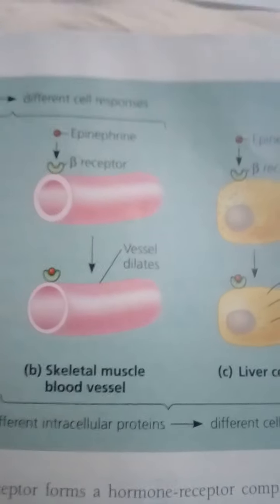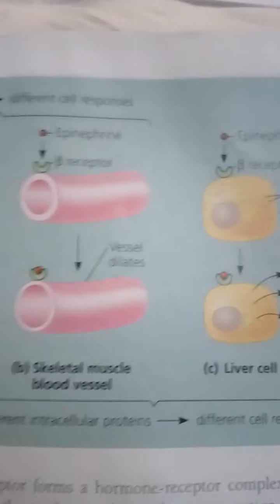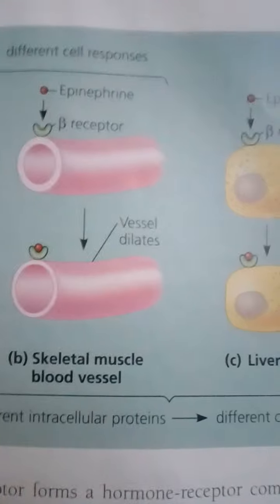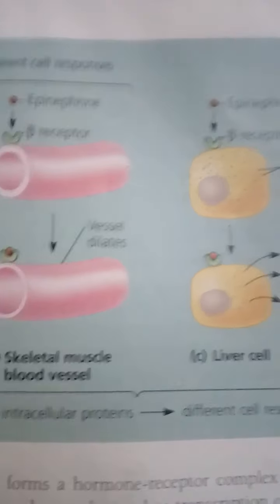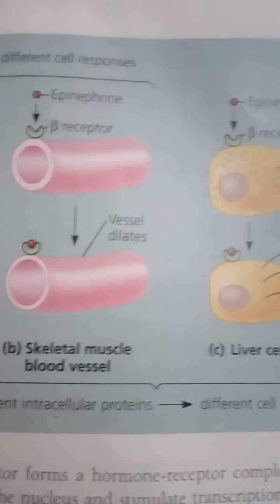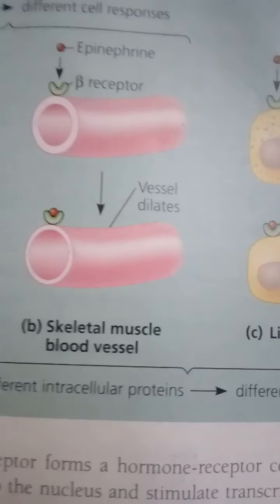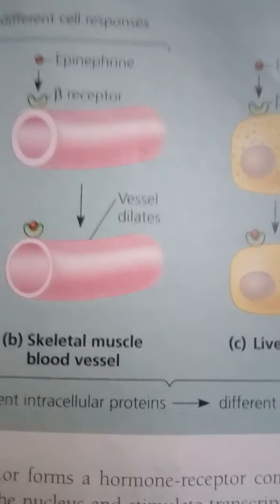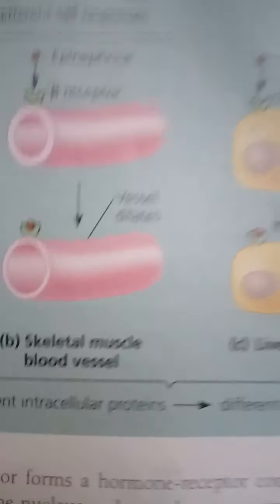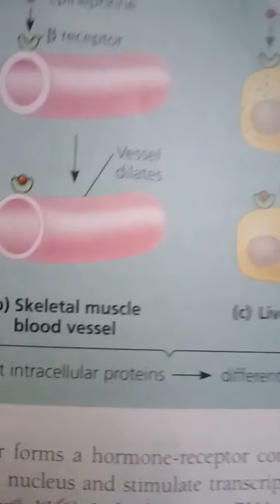Thyroid hormones and the hormonal form of vitamin D are among these hormones. All of these hormones are small, nonpolar, hydrophobic molecules that diffuse easily through the hydrophobic interior of cellular membranes. Intracellular receptors usually perform the entire task of transducing a signal within a target cell — the chemical signal activates the receptor, which then directly triggers the cell's response.